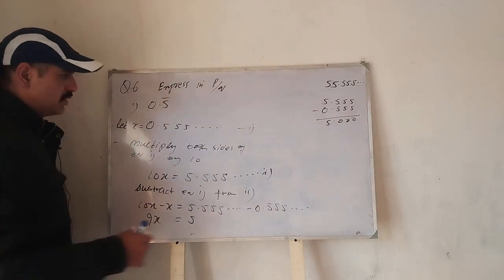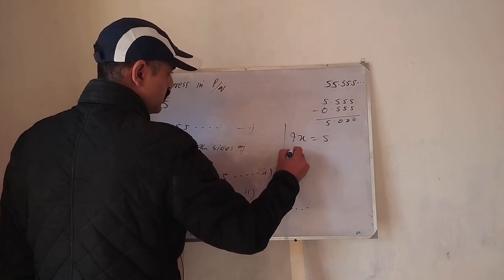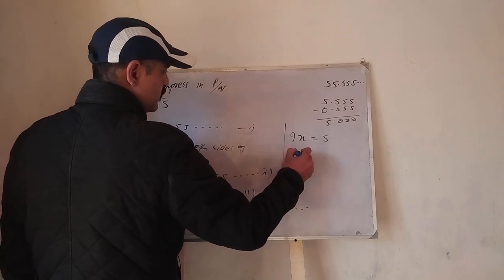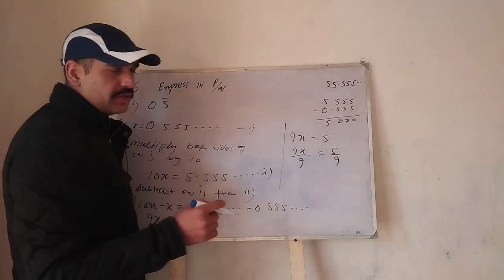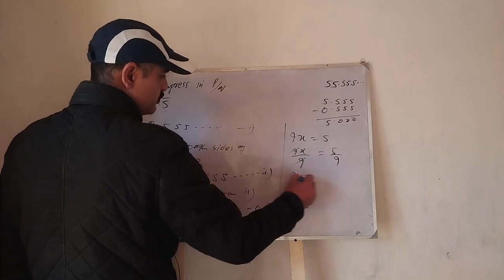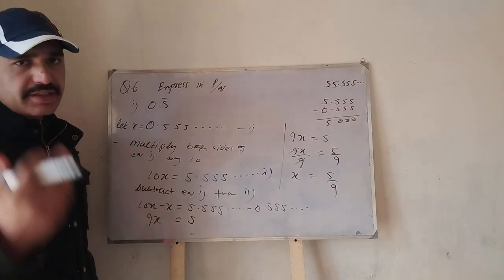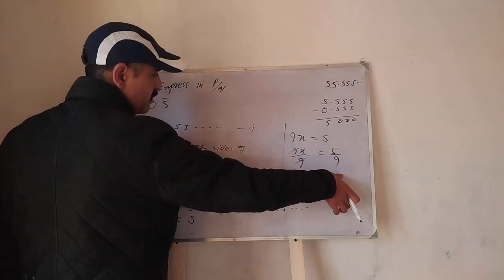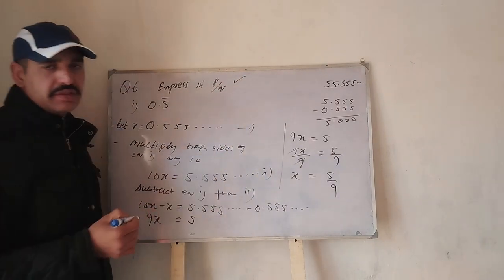9x is equal to 5. Yahaan se hum 9 ko remove karenge. Divide both sides of this equation by 9, so this will cancel out. X is equal to 5 upon 9. To is tarah se humne ek recurring decimal ko ek rational number mein convert kar diya hai, express kar diya hai in the form of P over Q.